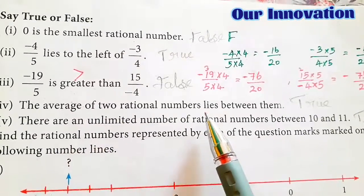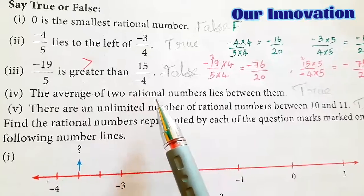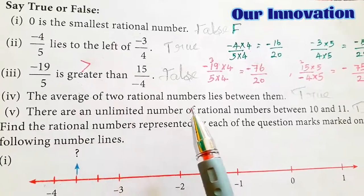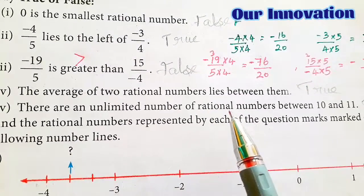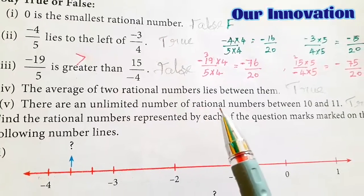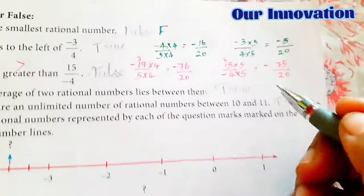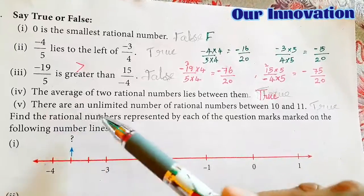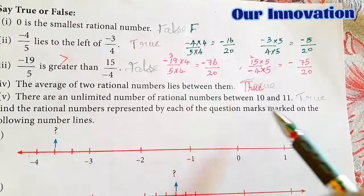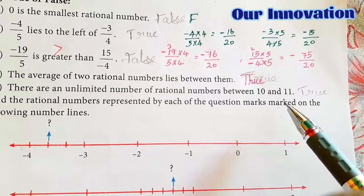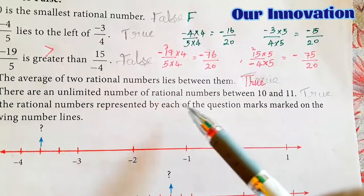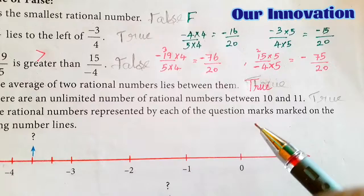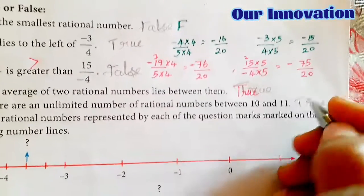Next: the average of two rational numbers lies between them. This is very straightforward — the average of two rational numbers always lies between them. And between 10 and 11, there are unlimited rational numbers — there are unlimited numbers. So: true.